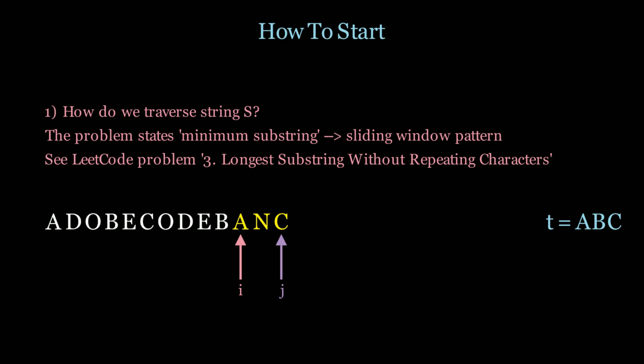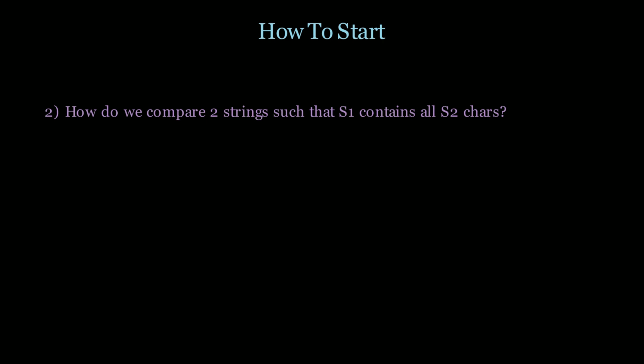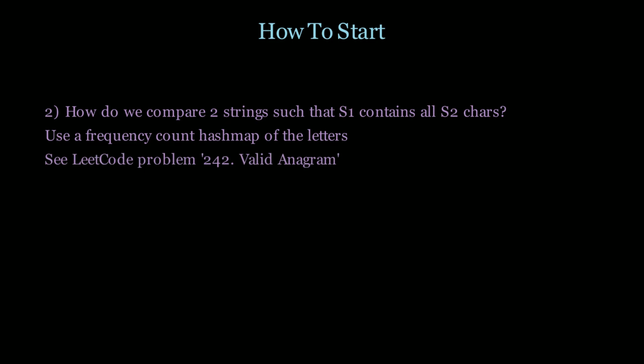As you've seen in the sliding window technique, at every iteration we needed to know if the current substring contained all of the characters of t. The question becomes: given two strings, how do we compare them such that s1 contains all the characters from s2? We can do so by using a frequency count hash map of the letters of both strings. A good LeetCode problem to get used to this pattern is number 242, valid anagram. This shows how a frequency count hash map can determine if two strings have the same amount of characters.